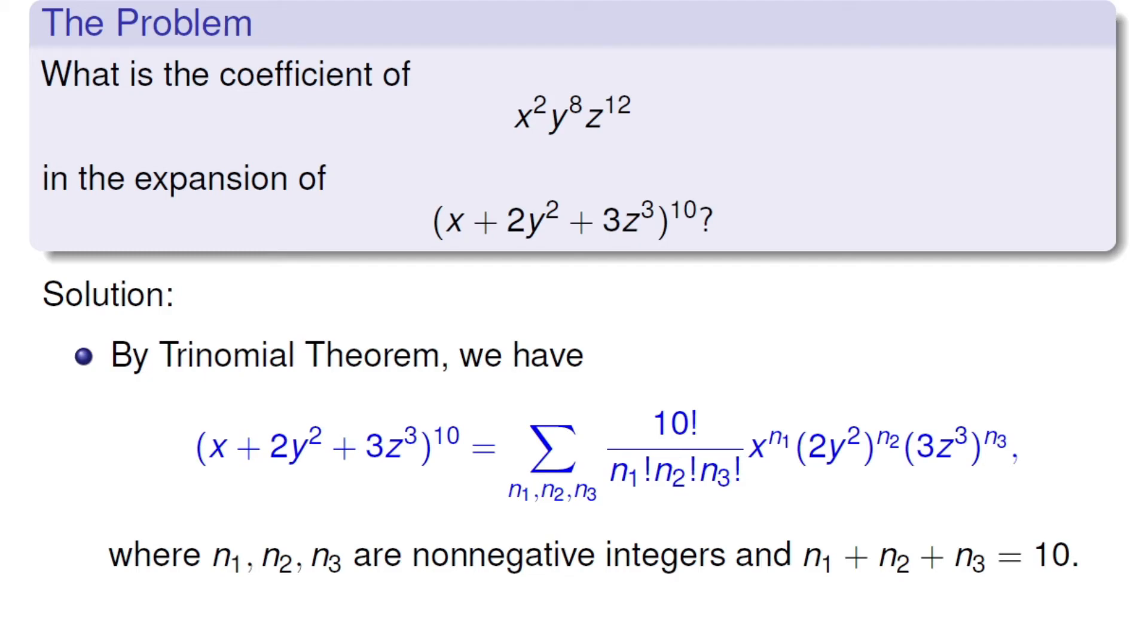Now here we have n1, n2, n3 are non-negative integers, and the summation is 10.